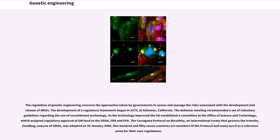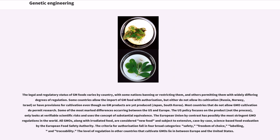The regulation of genetic engineering concerns the approaches taken by governments to assess and manage the risks associated with the development and release of GMOs. The development of a regulatory framework began in 1975, at Asilomar, California, where a set of voluntary guidelines regarding the use of recombinant technology were recommended. As the technology improved, the US established a committee at the Office of Science and Technology, which assigned regulatory approval of GM food to the USDA, FDA, and EPA. The Cartagena Protocol on Biosafety, an international treaty that governs the transfer, handling, and use of GMOs, was adopted on January 29, 2000. 157 countries are members of the protocol and many use it as a reference point for their own regulations. The legal and regulatory status of GM foods varies by country, with some nations banning or restricting them, and others permitting them with widely differing degrees of regulation. Some countries allow the import of GM food with authorization, but either do not allow its cultivation — such as Russia, Norway, and Israel — or have provisions for cultivation even though no GM products are yet produced, such as Japan and South Korea.